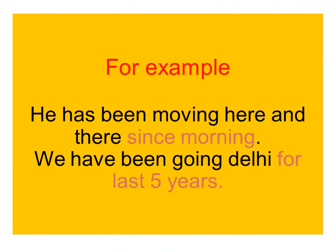For example, I have given two examples here for 'since' and 'for'. First: 'He has been moving here and there since morning.' — 'since' is used because morning is a starting point of time. Second: 'I have been going to Delhi for two hours.' — 'for' is used to show the period of time of the action.